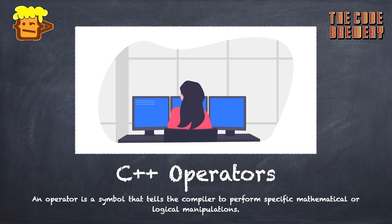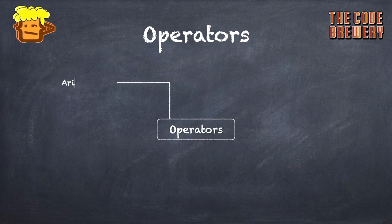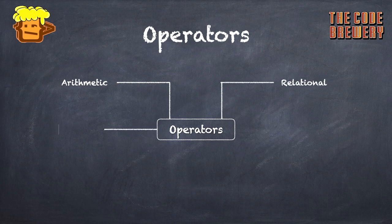Now we'll start with C++ operators. An operator is a symbol that tells the compiler to perform specific mathematical or logical manipulations, and C++ is rich in built-in operators. The types of operators we'll be studying are: arithmetic operators, relational operators, logical operators, bitwise operators, assignment operators, and miscellaneous operators.